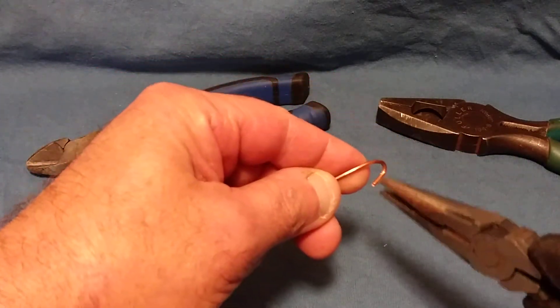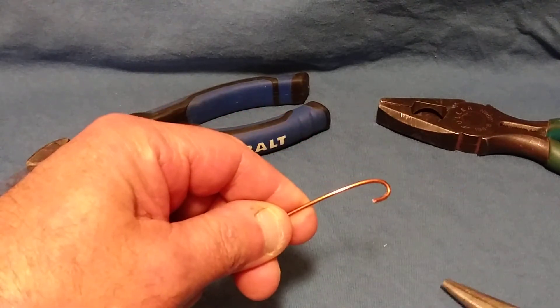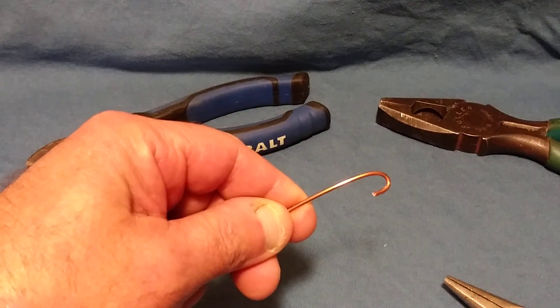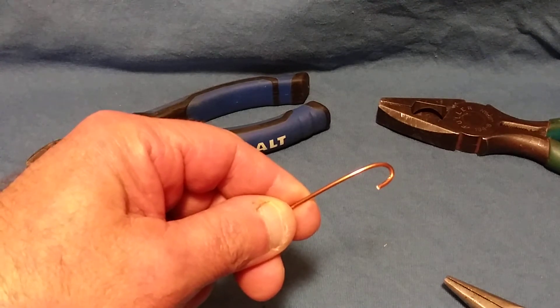And you would put the bare ground wire around your green screw on a light switch or an outlet or a green screw inside of a light fixture.